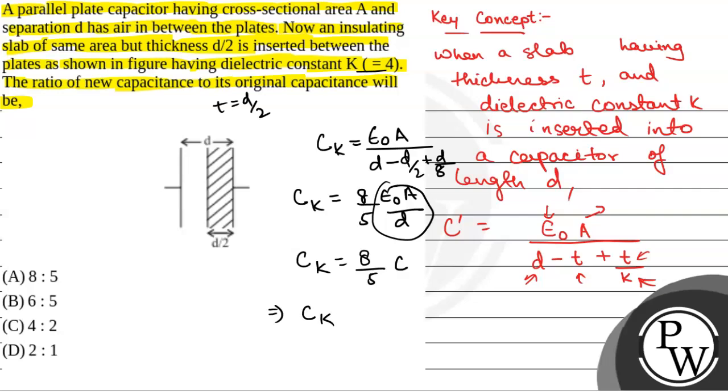So ck by c, the ratio of new capacitance to original capacitance, equals 8 by 5, which is option A. Hope you all understood it well. Best of luck.